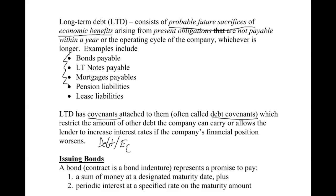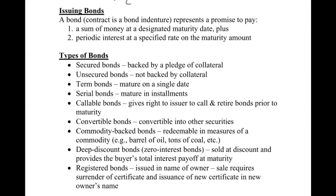When we talk about issuing bonds, the first big issue is how do we put a price on them. A bond is a contract that represents a promise to pay — a sum of money at a designated maturity date, which is the principal of the bonds, and then periodic interest at a specified rate. There are two main cash flows when dealing with bonds: the principal and the interest. Typically, the interest will be paid semi-annually.